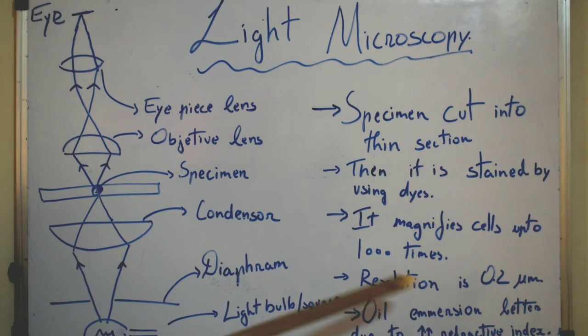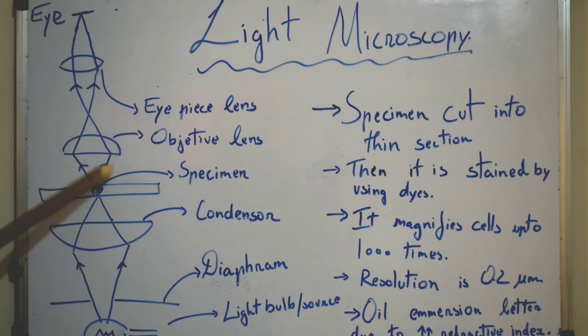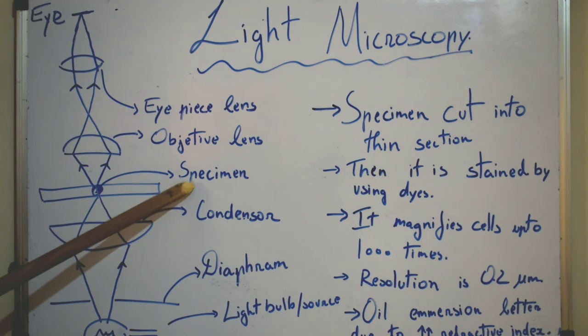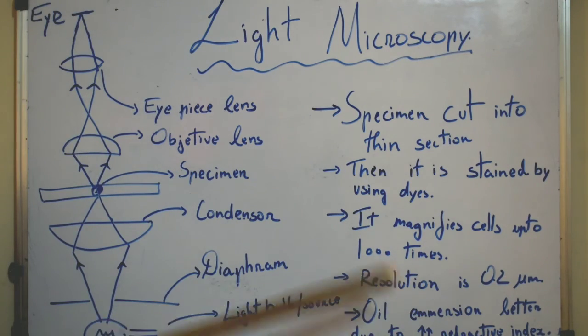Oil immersion can also be used. As you can see the medium through which light passes between specimen and objective lens is air. So if we put a drop of oil in this due to the higher refractive index of oil we will get a better magnification. So oil immersion can also be used in this light microscope to get a better magnification.